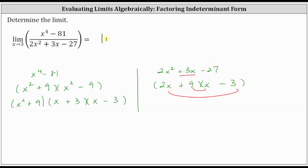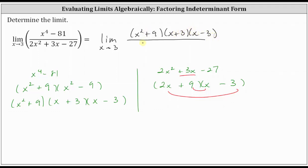So the given limit equals the limit as x approaches three of the factored form: the numerator has factors x squared plus nine, x plus three, and x minus three; the denominator has factors two x plus nine and x minus three. Notice the common factor of x minus three between numerator and denominator results in a hole in the rational function, but a hole does not affect a limit. Therefore, we can simplify and use the simplified function to evaluate the limit.